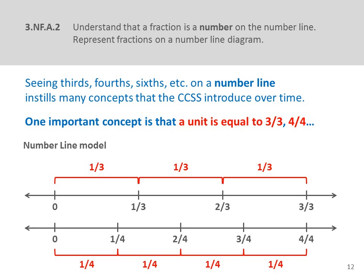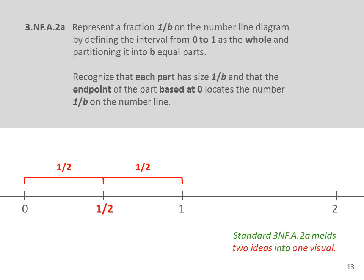One thing children will be able to see on the number line is equivalency. For example, they can see that 2 halves equal a unit. 2 halves, 3 thirds, and 4 fourths are equivalent fractions. The first section of 3NFA2 says: represent a fraction 1/b on a number line diagram by defining the interval from 0 to 1 as the whole and partitioning it into b equal parts. Recognize that each part has the size 1/b, and that the endpoint of the part based at 0 locates the number 1/b on the number line.